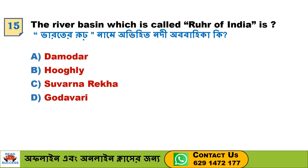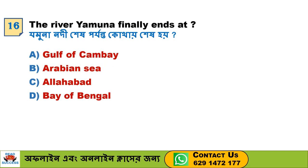Next question: The river basin which is called the Ruhr of India is — Option A. Damodar, Option B. Hooghly, Option C. Subarnarekha, Option D. Godavari. Option A, Damodar, is the correct answer.